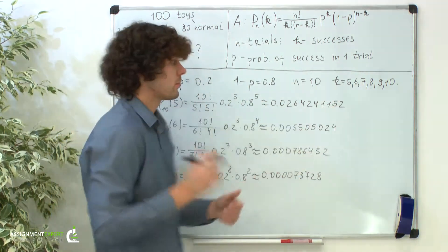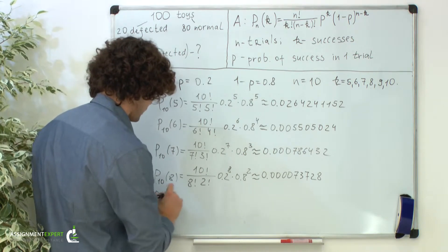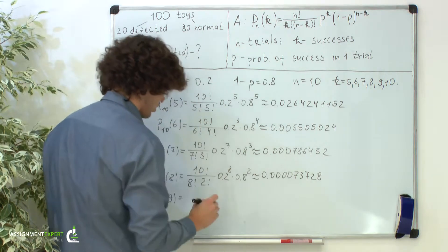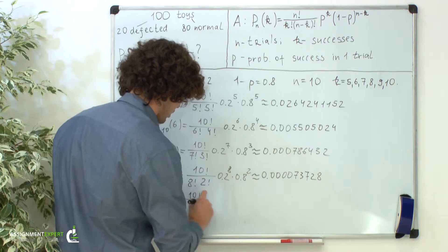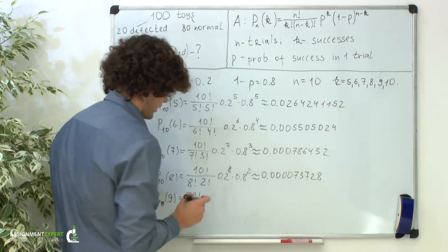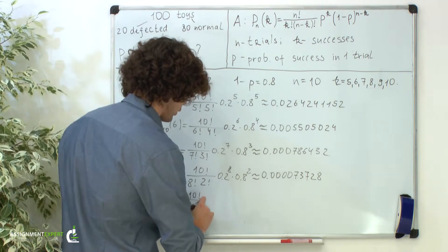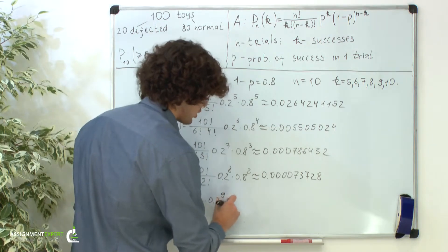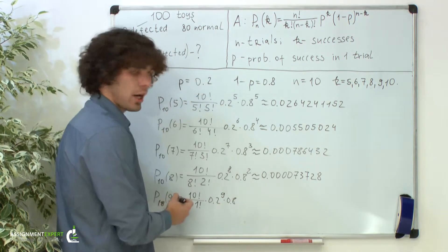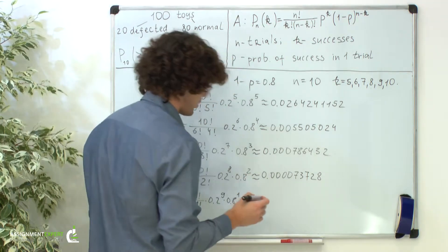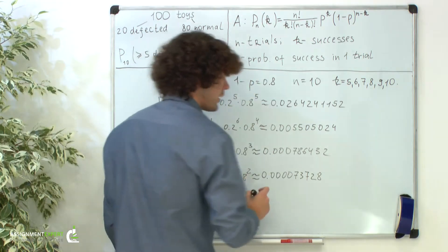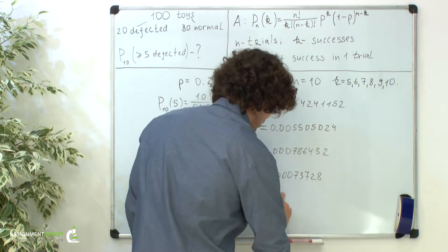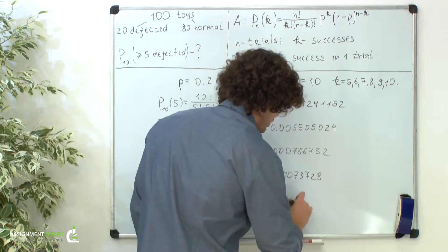The probability of 9 out of 10 equals 10 factorial over 9 factorial times (10 minus 9), which is 1 factorial, times 0.2 raised to the ninth power, times 0.8 raised to the power of 10 minus 9, so we have the first power here. This is approximately 0.0000004096.